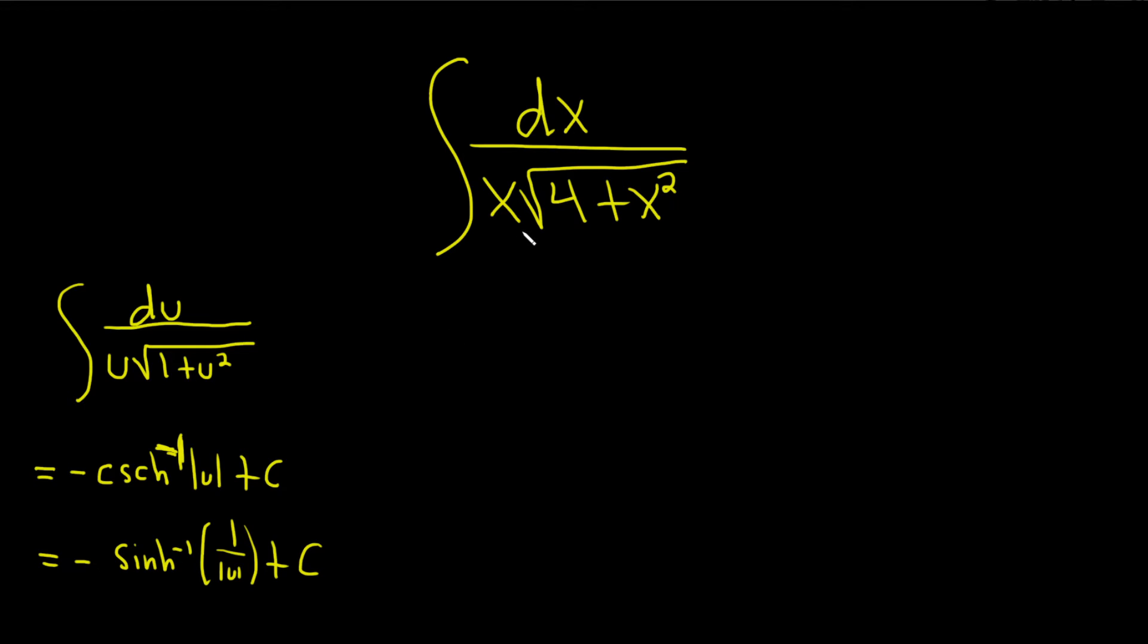So we have to make what we have match this. We can use either of these answers, both are correct. The problem is we have a 4 here, so we need to get rid of it. So what I'm going to do is I'm going to do some math here on the side. If we have the square root of 4 plus x squared, this 4 needs to be a 1.